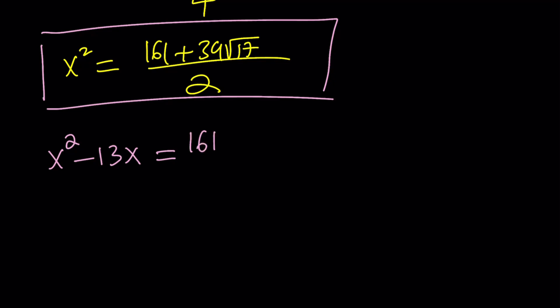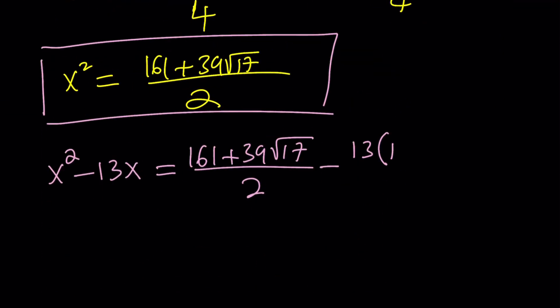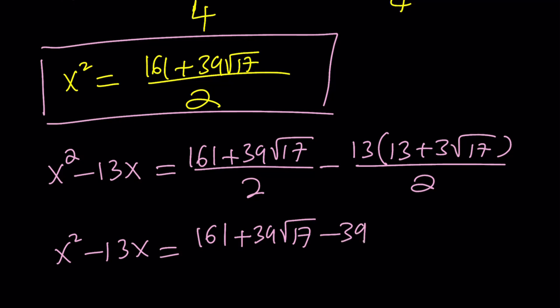So what do you do with that? Put it together. If you remember, the problem was asking for x squared minus 13x. So let's go ahead and plug it in. x squared is 161 plus 39 root 17 over 2 minus 13 times this number. What was x? 13 plus 3 root 17 divided by 2. So we have a common denominator. We can just go ahead and combine the numerators. 161 plus 39 root 17 minus 169, and then with a minus sign, because negative times positive, is going to be 39 root 17 all over 2.